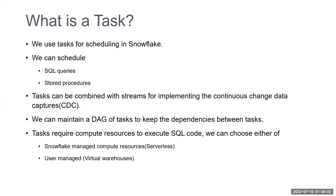Suppose I have two tasks — task one and task two — and task two should run only upon the successful completion of task one. We have a feature called dependencies, so we can easily mention dependencies between multiple tasks. Whenever you mention dependencies among tasks, a graph will be formed. That graph we call a directed acyclic graph, and by using these DAGs we can easily maintain dependencies between multiple tasks.